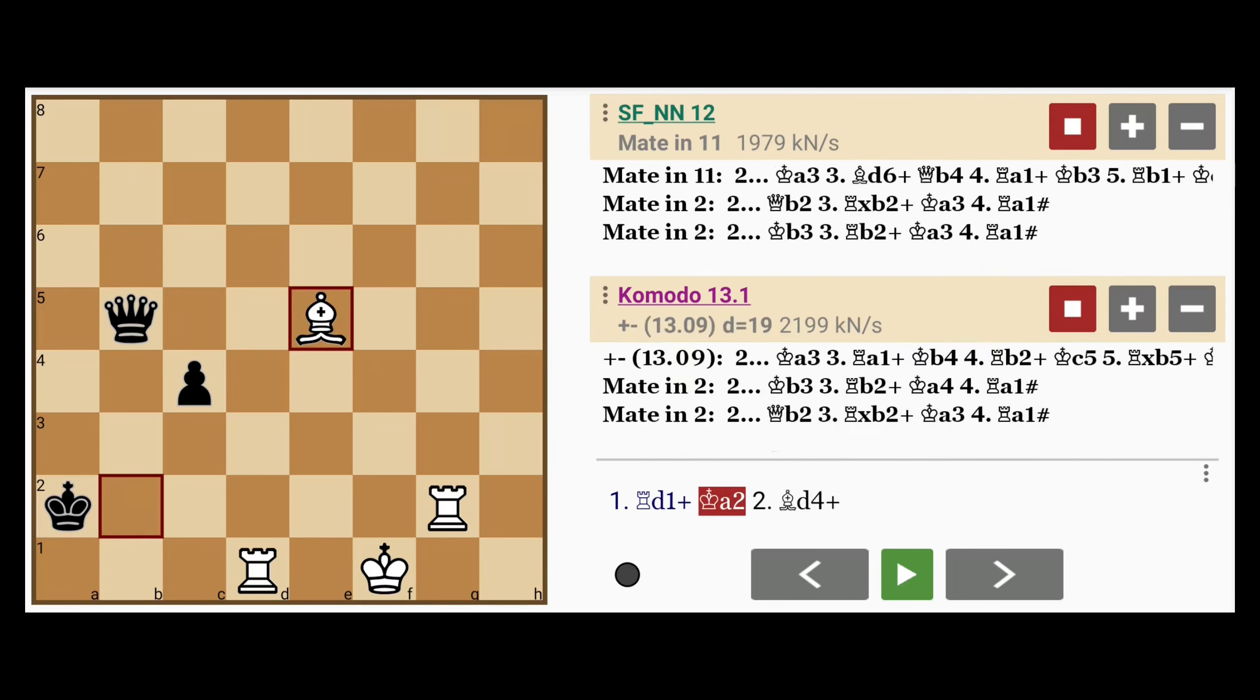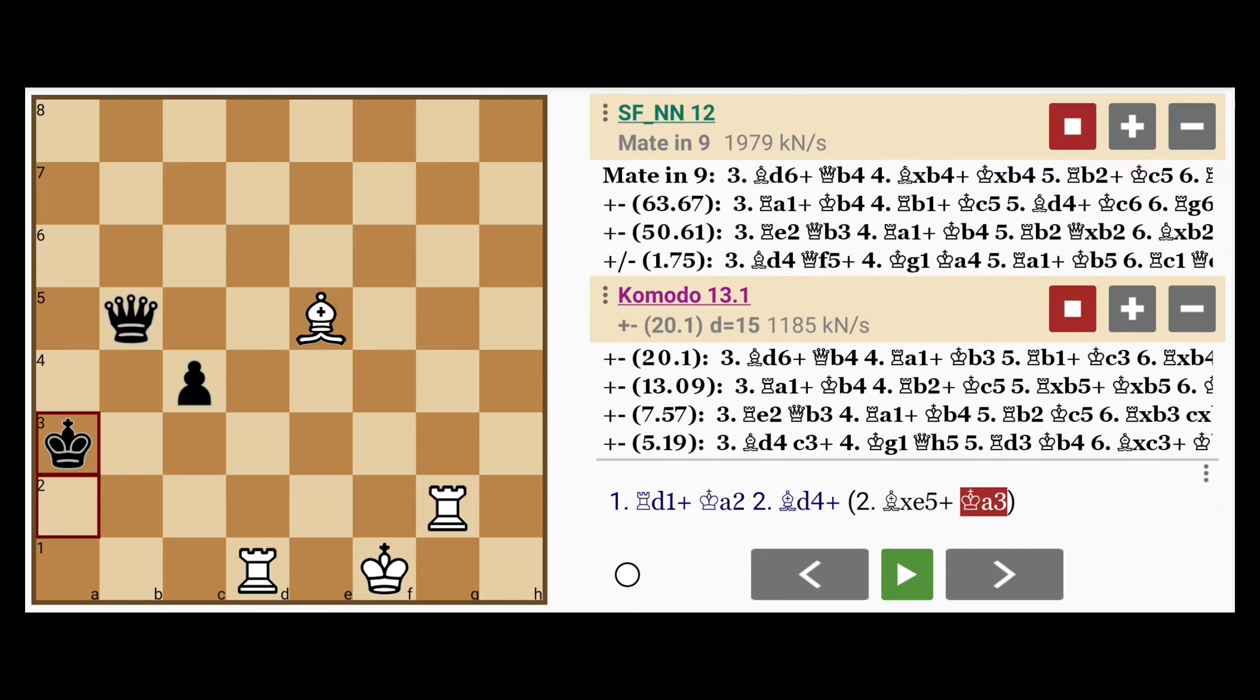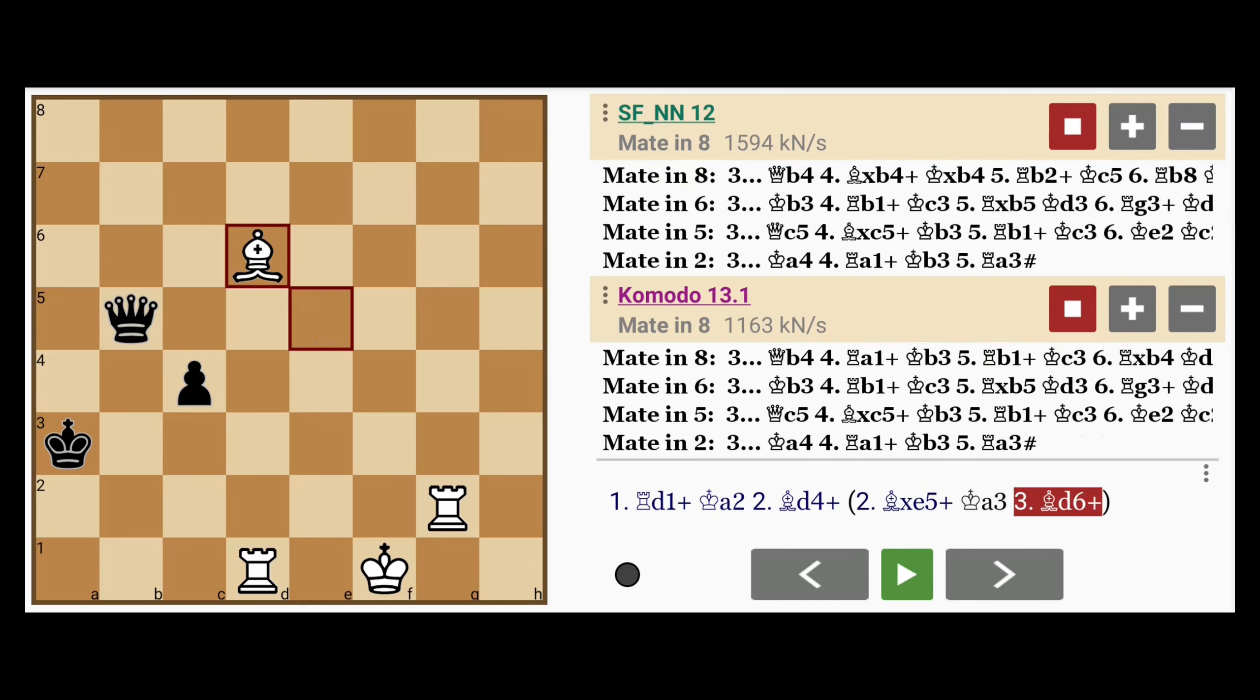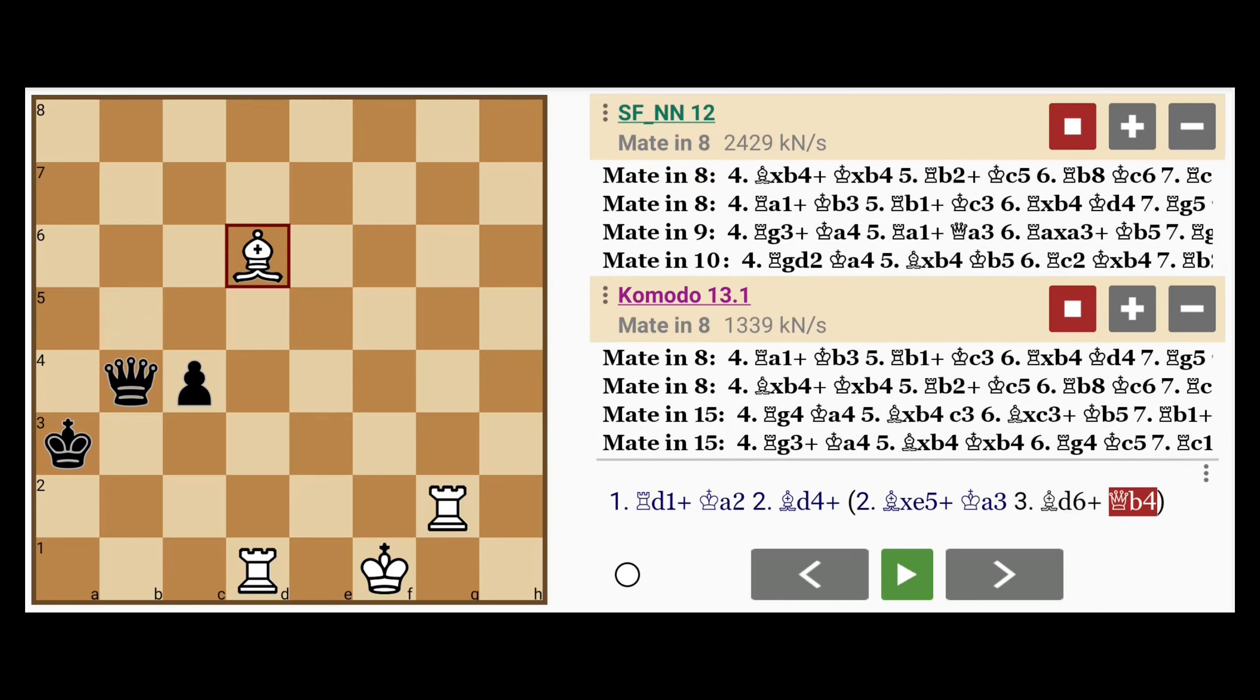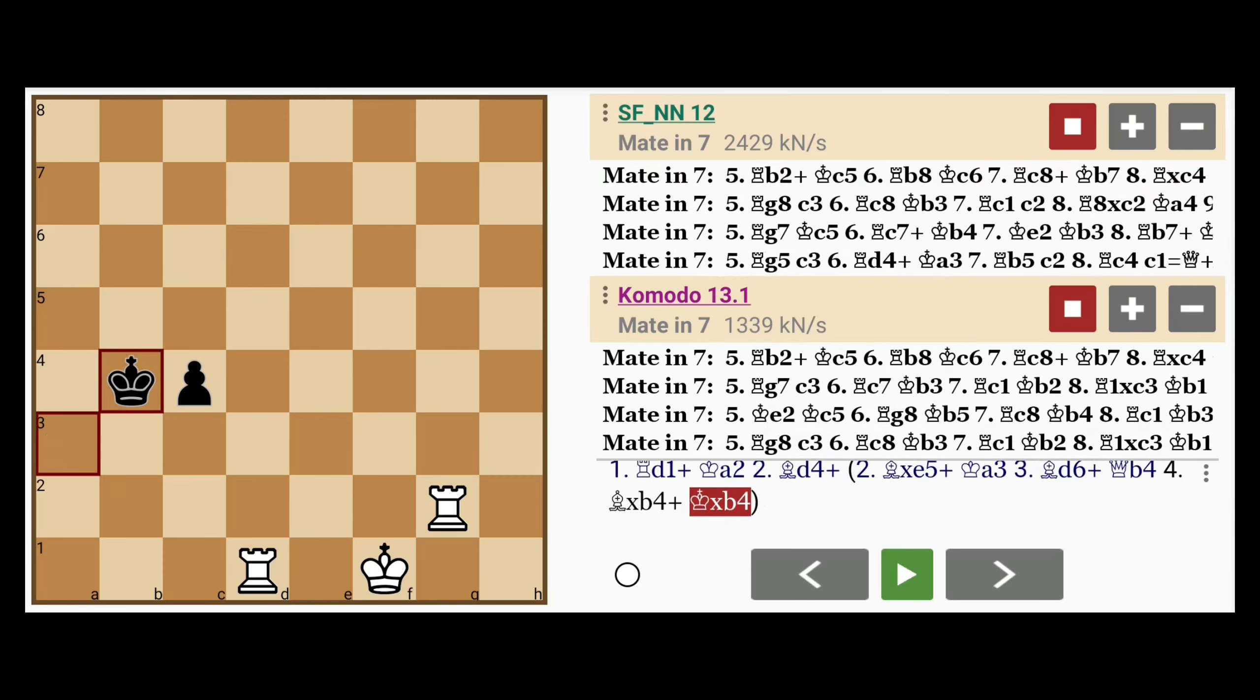Now why not bishop captures queen? Well, as you can see from the engine analysis, then king to a3, the mate stretches on longer than it needs to be. Bishop to d6, queen to b4, bishop captures b4, king captures b4, and this takes longer.